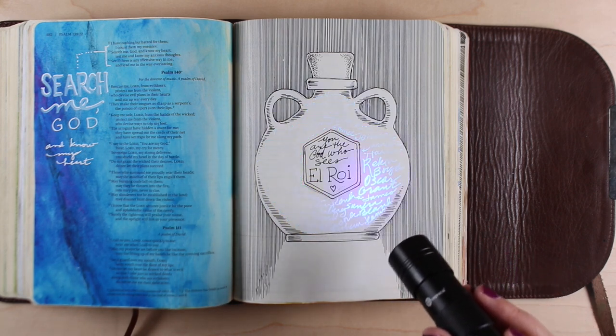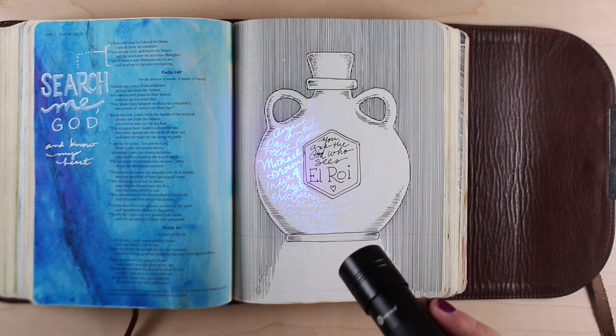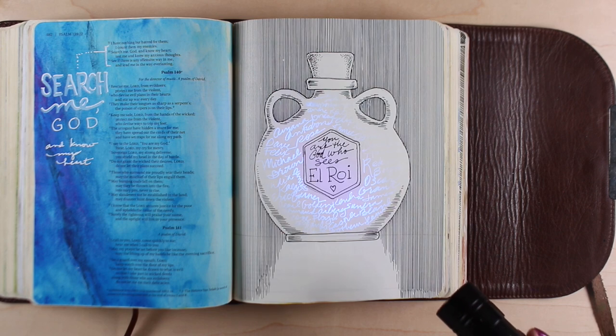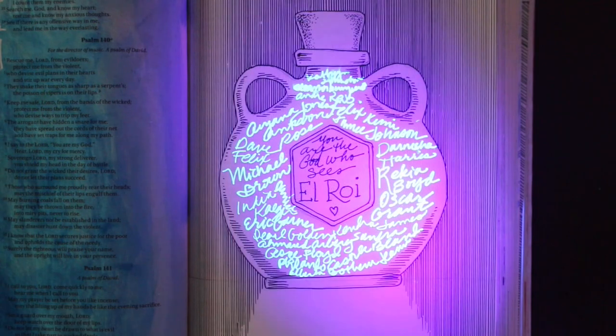I wrote the names in black light, invisible ink, not because I want to hide the names, but knowing that this jar carries many, many more with it from generations gone by.